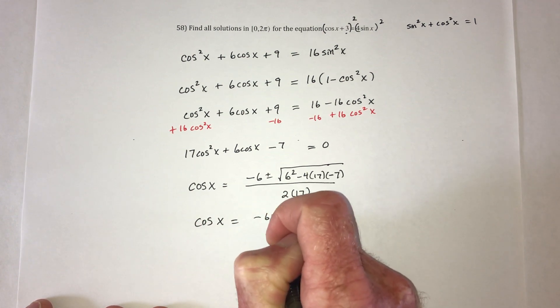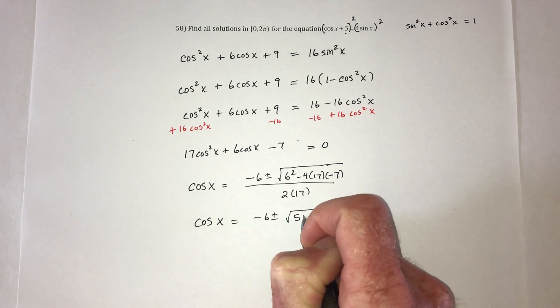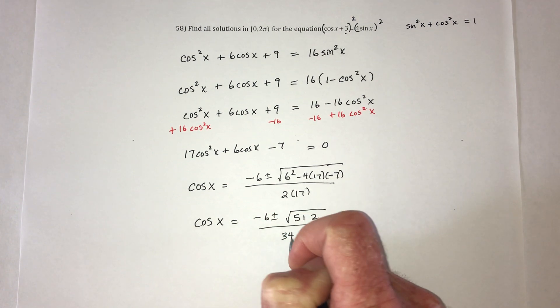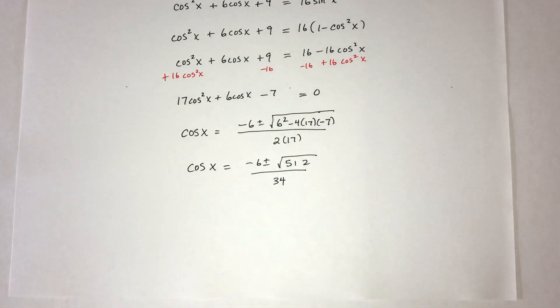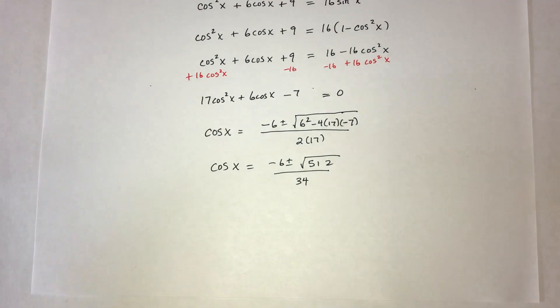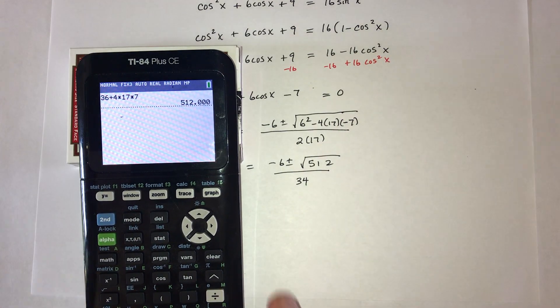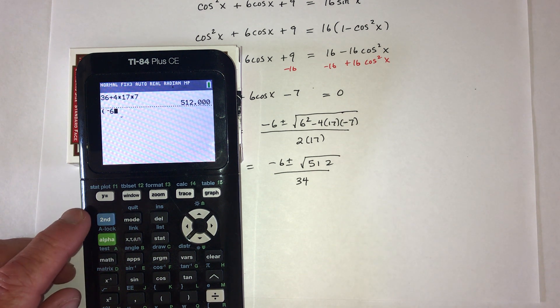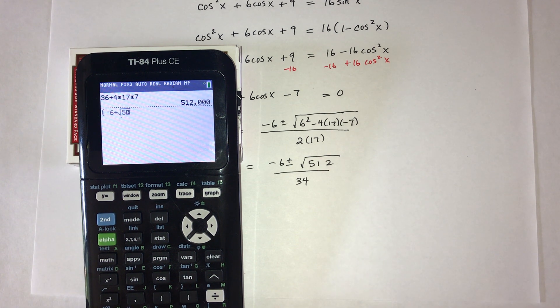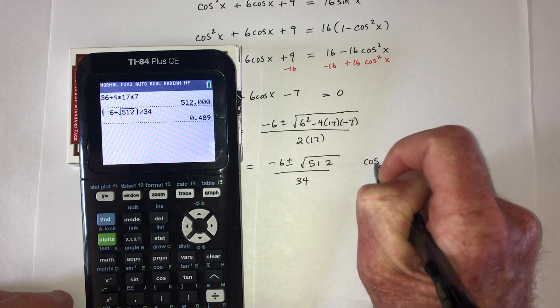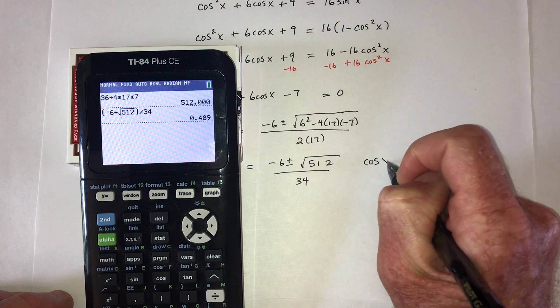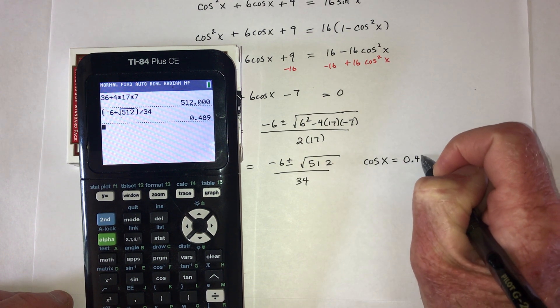Negative 6 plus or minus the square root of 512 is divided by 34. Now it's time to get the two decimal answers for that expression. So I need parentheses and then negative 6 plus the square root of 512. Parentheses, that gets divided by 34. So that means cosine of x equals 0.489.